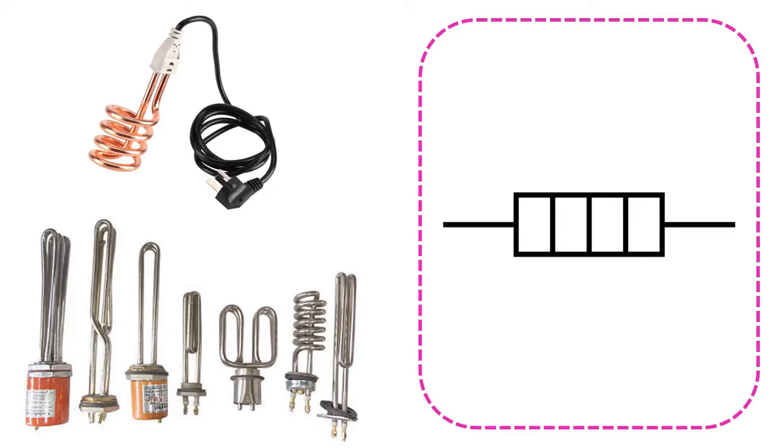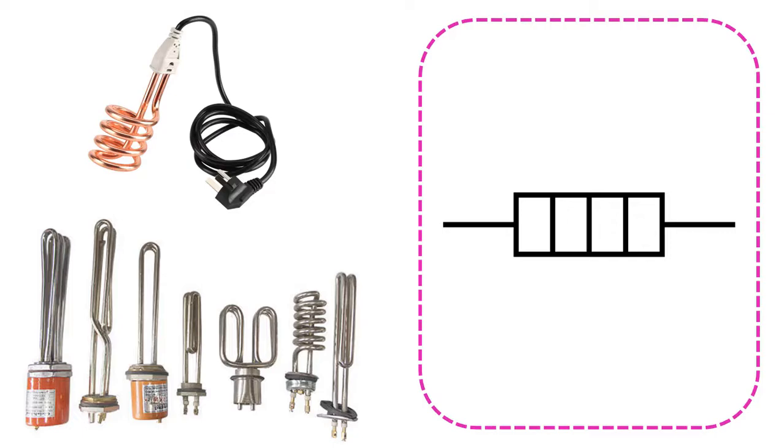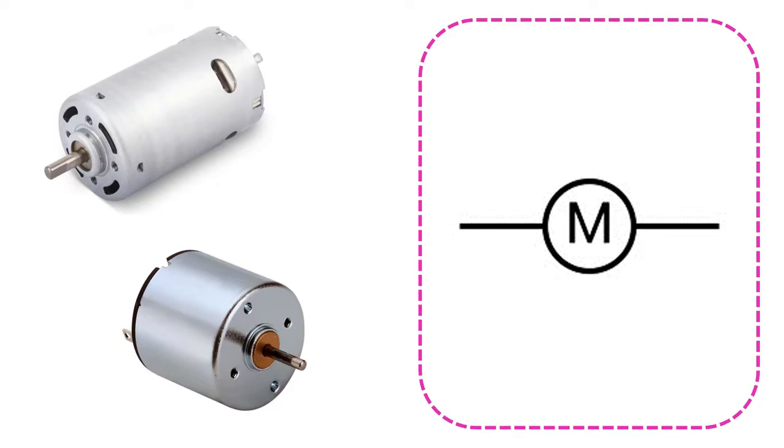This symbol is used for heaters, also known as resistances, used in devices such as kettles that convert electrical energy into heat. If there is a motor in the circuit that converts electrical energy into motion energy, this is indicated by the circuit symbol.